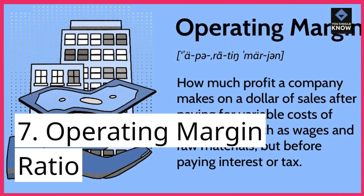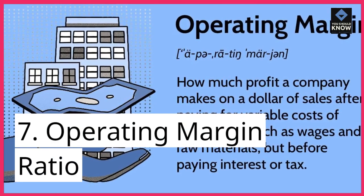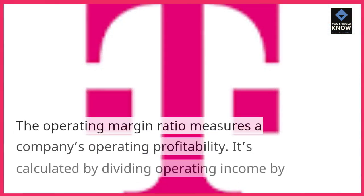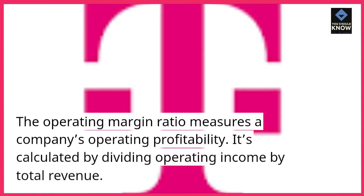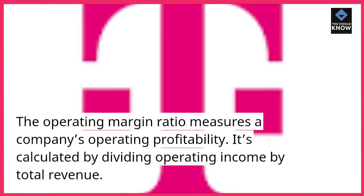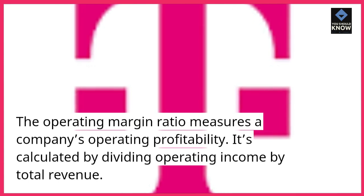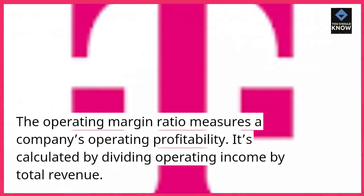7. Operating Margin Ratio. The Operating Margin Ratio measures a company's operating profitability. It's calculated by dividing operating income by total revenue.